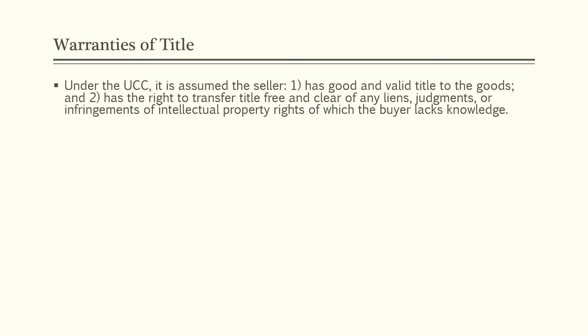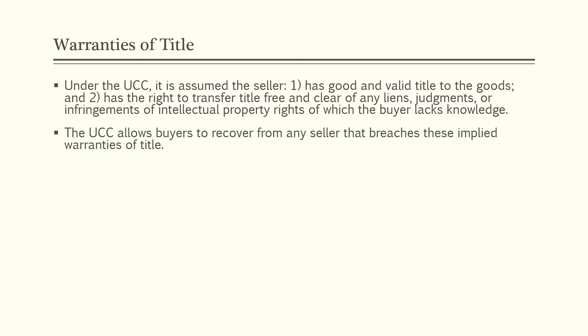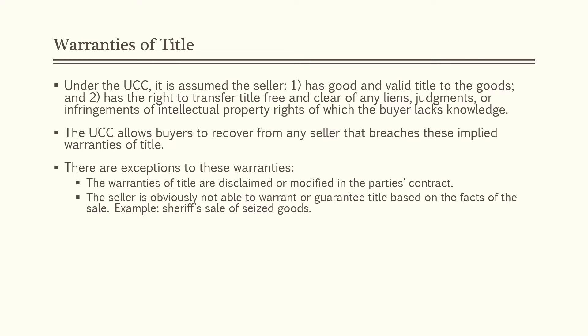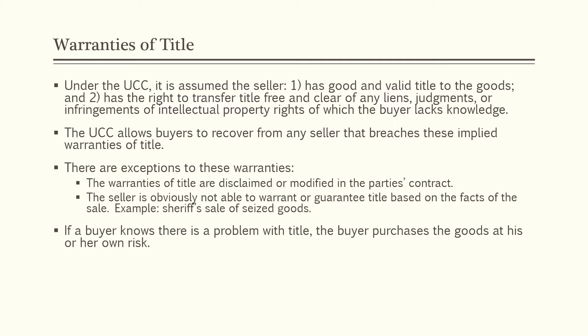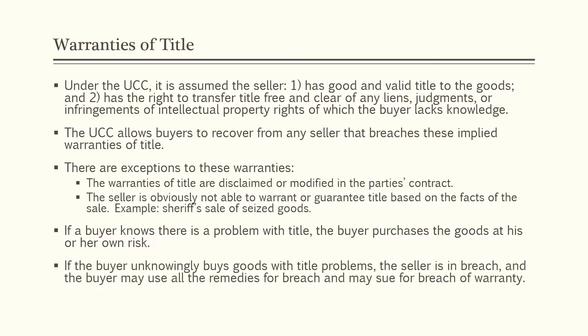The first broad category is warranty of title. Under the UCC, it is assumed the seller has good and valid title to the goods and the right to transfer title free and clear of any liens, judgments, or infringements of intellectual property rights of which the buyer lacks knowledge. The UCC allows buyers to recover from any seller that breaches these implied warranties of title. Exceptions exist when warranties of title are disclaimed in the contract, or the seller obviously cannot warrant title based on the facts of the sale — for example, a sale of seized goods. If the buyer unknowingly buys goods with title problems, the seller is in breach and the buyer may use all remedies for breach of warranty.